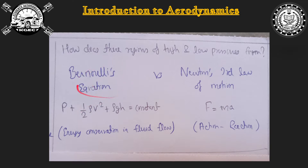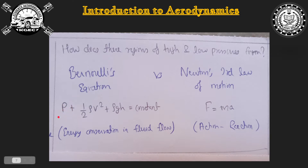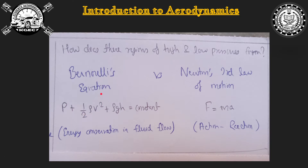How does Bernoulli's equation explain the lift component? If we neglect the height difference for our purposes, since the difference in height is not very much, this says that pressure increases at the expense of velocity. That is the statement of Bernoulli's equation — if pressure increases, velocity has to decrease, and if pressure decreases, velocity has to increase. So how does this explain the lift?